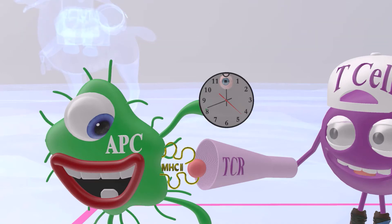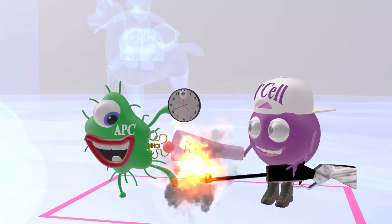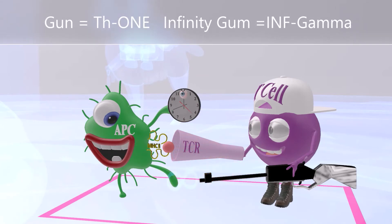This leads to the CD4 T cell differentiating into the Th1 cell, which is why this T cell now has a gun — gun for 'one,' as he differentiated into a Th1 cell.